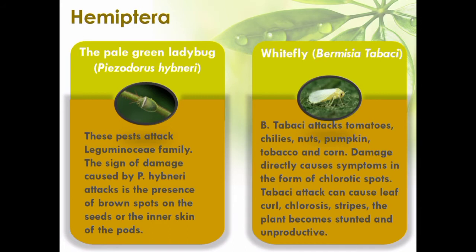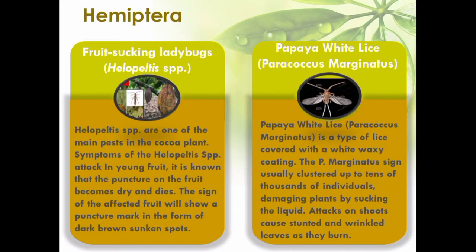Whitefly damage symptoms include yellow wings, stripes, or mosaics, causing the plant to become stunted and unproductive. The indirect damage of this pest is that it acts as a vector for spreading the gemini virus, which is transmitted persistently. Helopeltis SPP, the fruit-touching bug, is one of the main pests of cocoa plants. Symptoms of the Helopeltis SPP attack on young fruit include the puncture on the fruit becoming dry and dead.